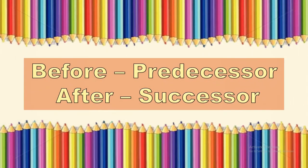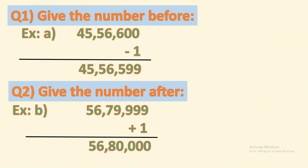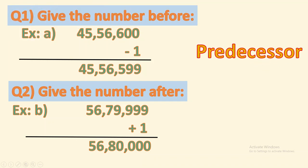Now let's go for the next concept: number before and number after. The number before has a similar word — predecessor — and number after is called successor. To find the number before, subtract 1 from the given number. The number given is 45 lakh 56,600. Subtracting 1 gives 45 lakh 56,599. The other name for number before is predecessor.